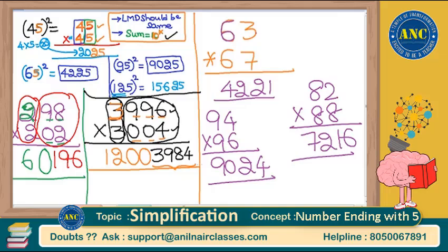This is a beautiful concept that many students think is only applicable to find squares of numbers ending with 5 — but no. The two key conditions are: leftmost digit should be same, and the sum of the remaining digits should be of the form 10 power k. Take any numbers satisfying these two conditions and this will be the best method to solve. The answer for 3996×3004 is 12003984, not 1203984 — please take care of that extra zero.